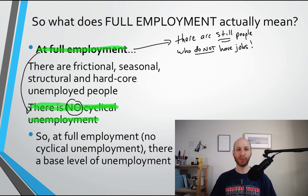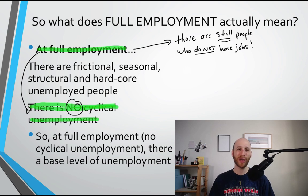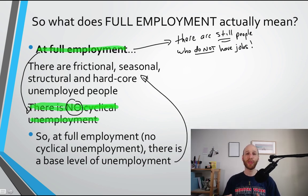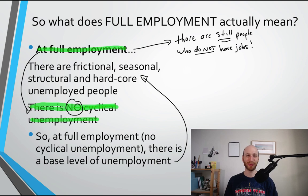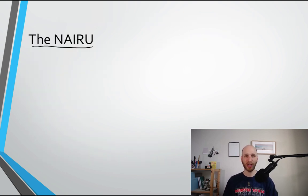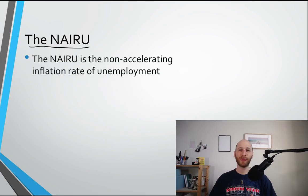At full employment, when there is no cyclical unemployment, there is still a base level of unemployment. There is still a group of people that cannot find work. Those people consist of frictional, seasonal, structural, and hardcore unemployed people. So we've just looked at full employment, and now we're going to try and understand the NAIRU.